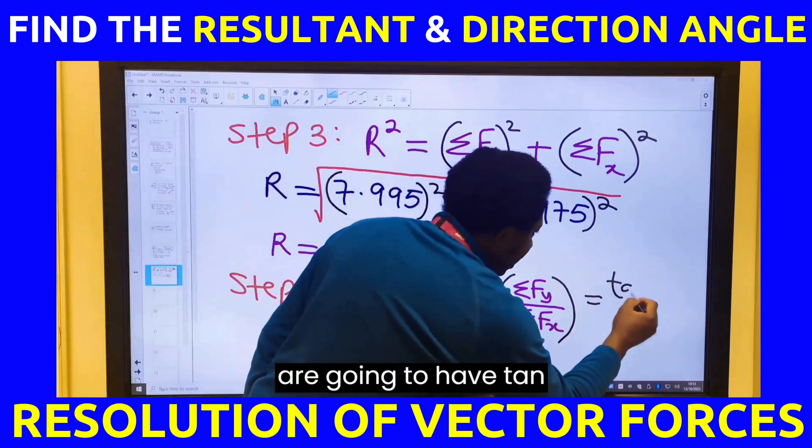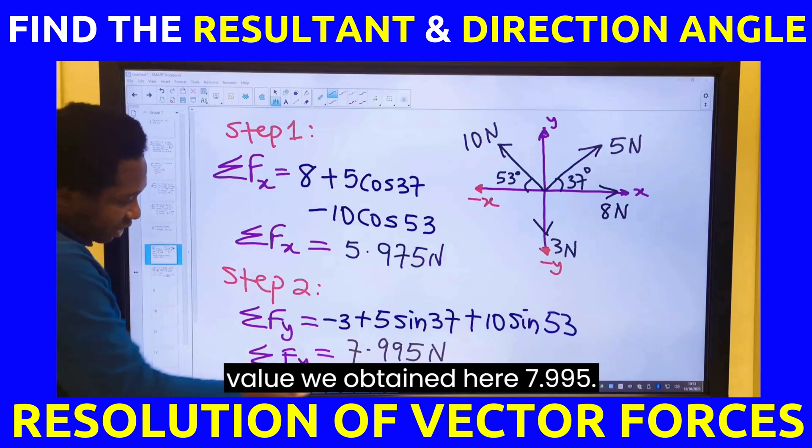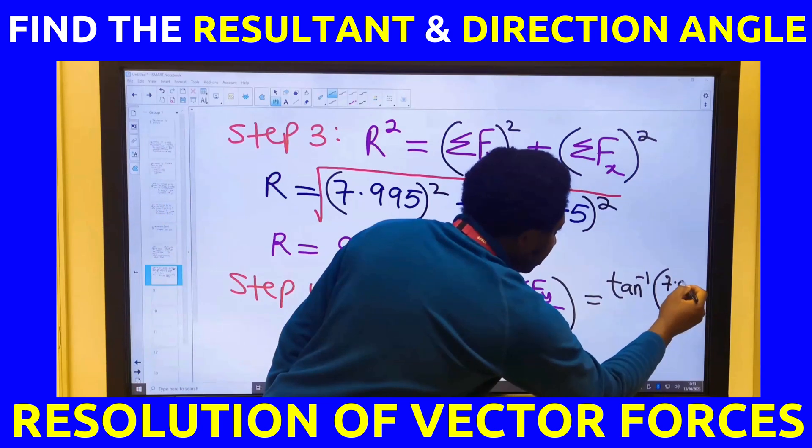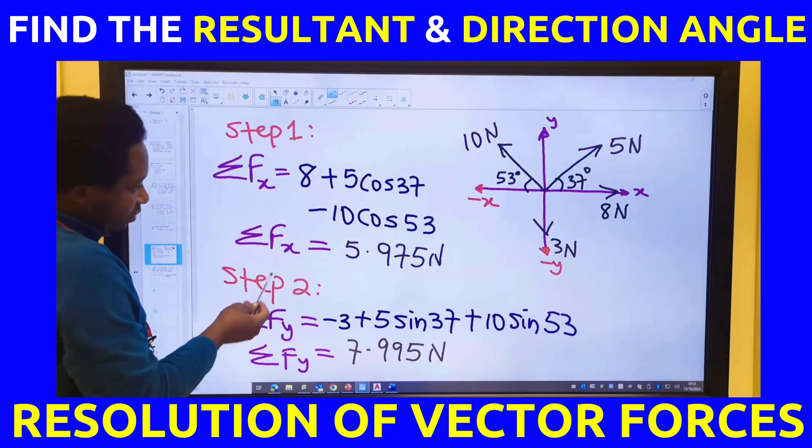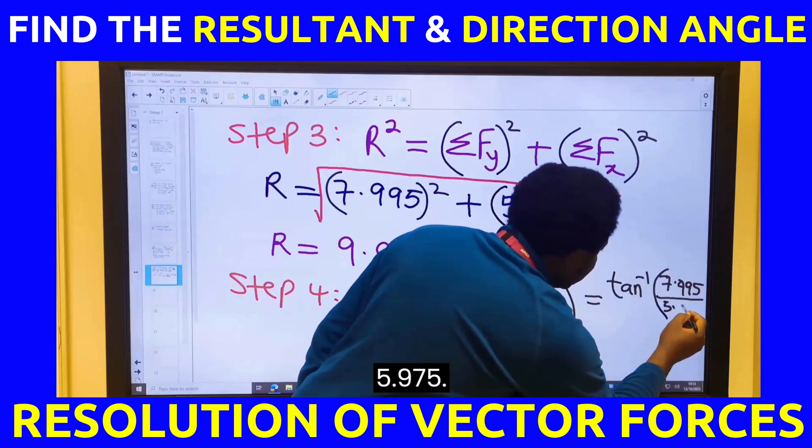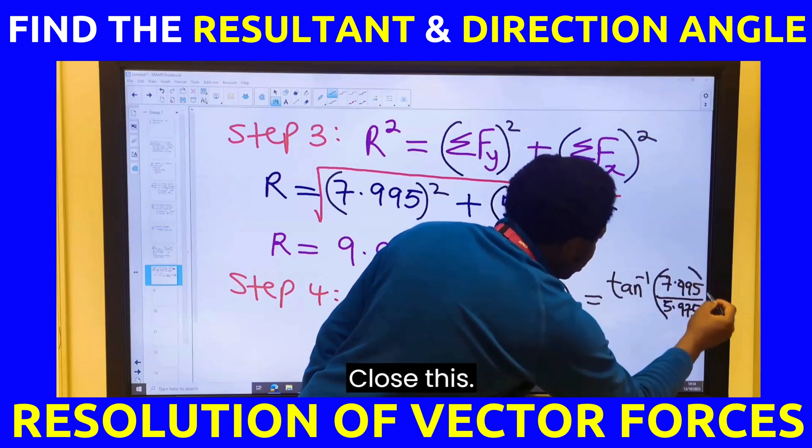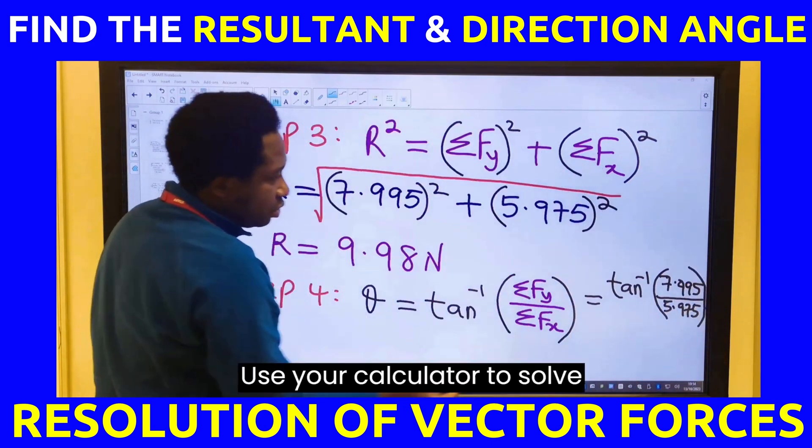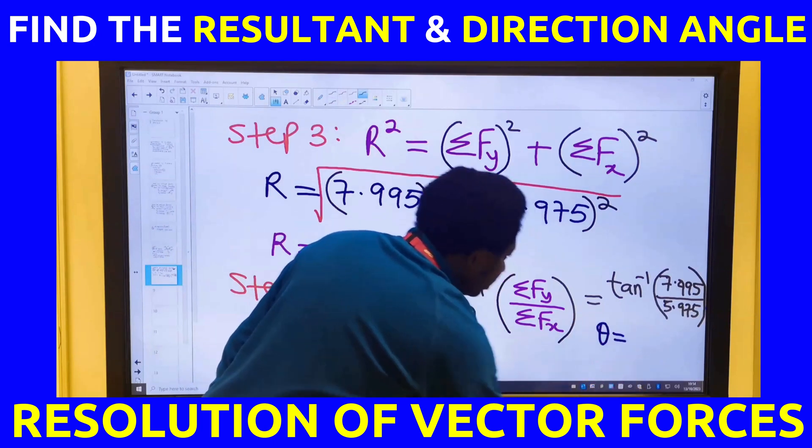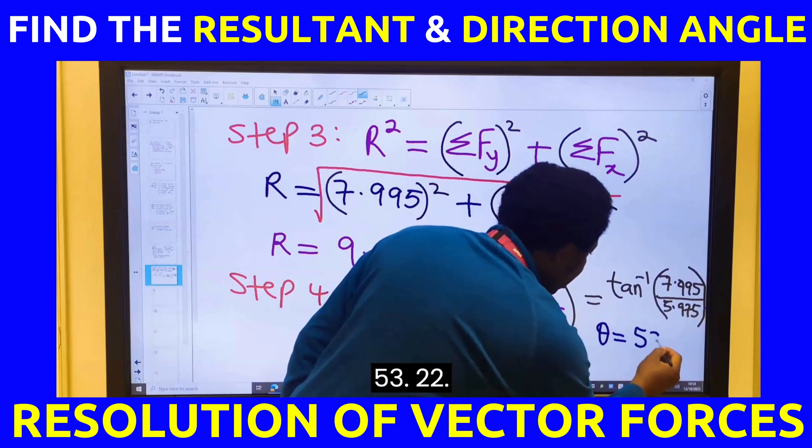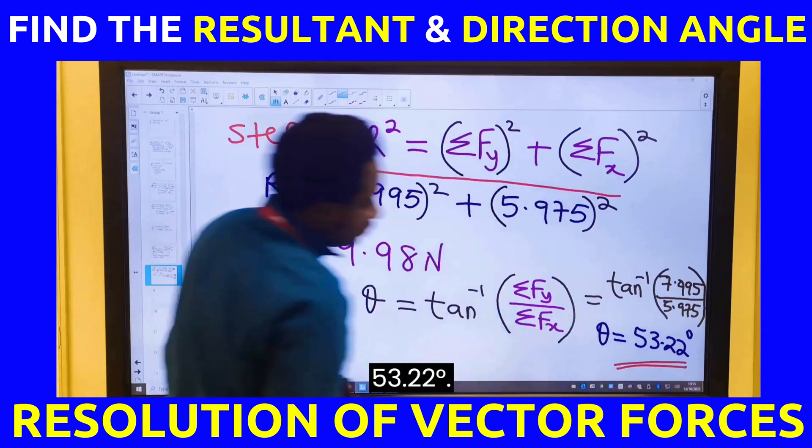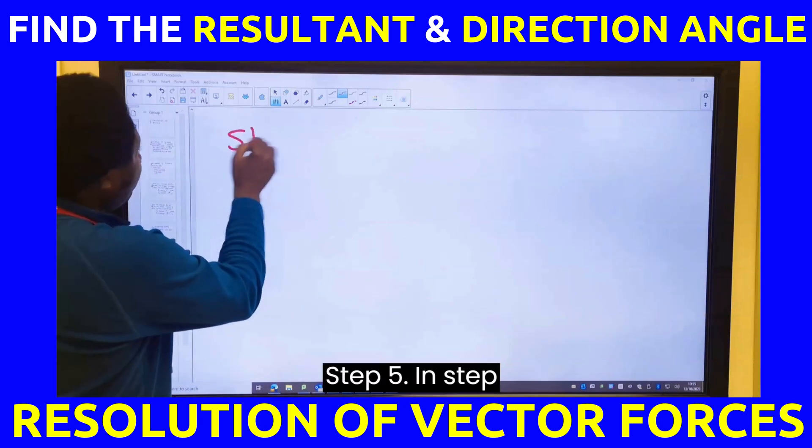Here, we are going to have tan inverse of what is the value we obtained? 7.995 divided by, for the x-axis, we obtain 5.975. Use your calculator to solve this. What do you have as the direction? The angle is 53.22 degrees.